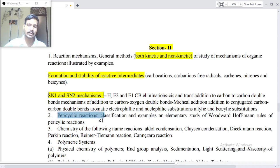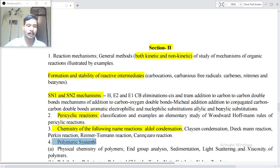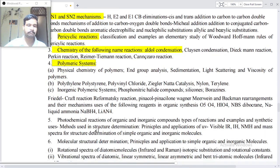Pericyclic reactions, classification and examples, elementary study of Woodward-Hoffmann rules of pericyclic reactions, chemistry of the following name reactions: Aldol condensation, Claisen condensation, Dieckmann reaction, Perkin reaction, Reformatsky reaction, Cannizzaro reaction, and polymeric systems.